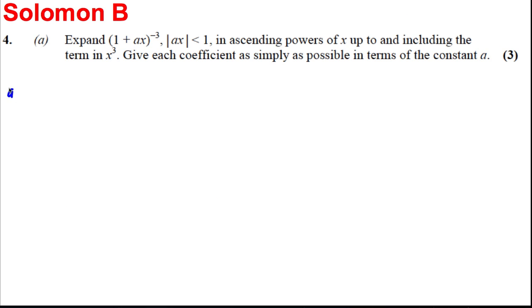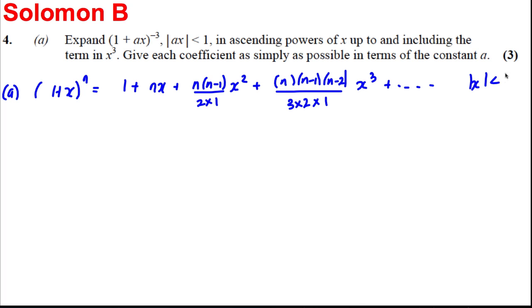Part A. The binomial theorem says, always write down the binomial theorem: 1 plus X to the power of N is 1 plus NX plus N(N-1) over 2 times 1, X squared, plus N(N-1)(N-2) over 3 times 2 times 1, X cubed plus dot dot dot, for the modulus of X less than 1. That's the binomial theorem.